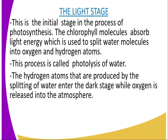There are two stages involved in the process of photosynthesis. The first stage is the light stage. This is the initial stage in the process of photosynthesis. The chlorophyll molecules absorb light energy, which is used to split water molecules into oxygen and hydrogen atoms. This process is called photolysis of water. Photolysis means the splitting of water molecules to produce hydrogen and oxygen atoms in the process of photosynthesis.